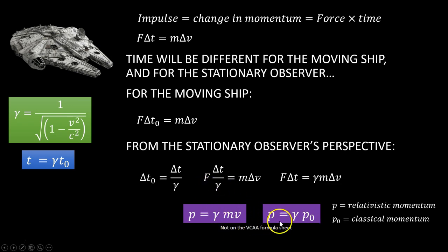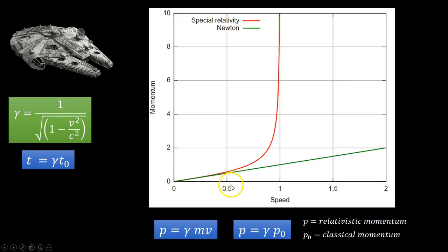Now, these two formulae are not on the VCE formula sheet, strangely enough, so you may want to add this formula to your summary sheet. If we draw a graph of classical momentum against speed, it increases linearly. Whereas the relativistic momentum increases in much the same way that the gamma constant would change if we plotted that against speed.